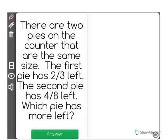There are two pies on the counter that are the same size. The first pie has two-thirds left. The second pie has four-eighths left. Which pie has more left?